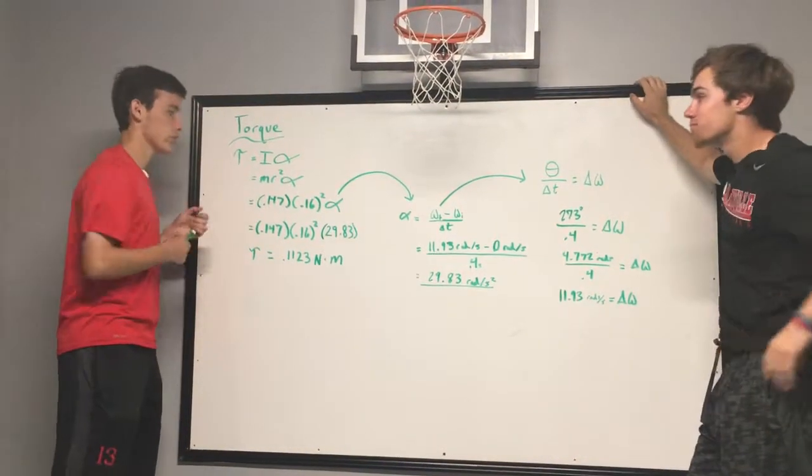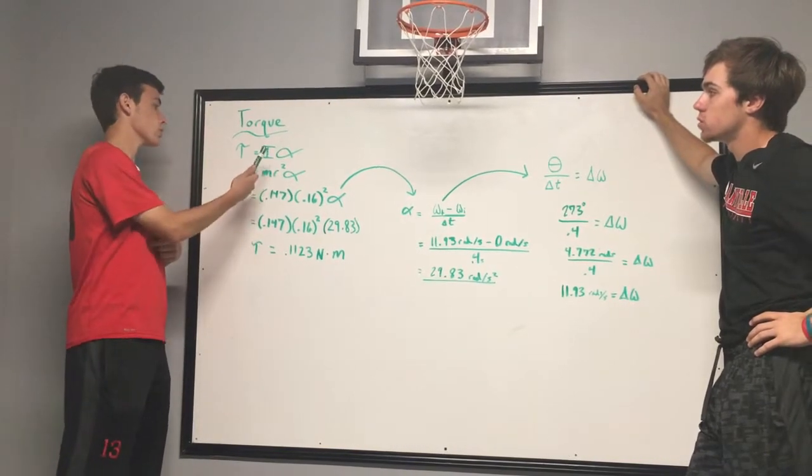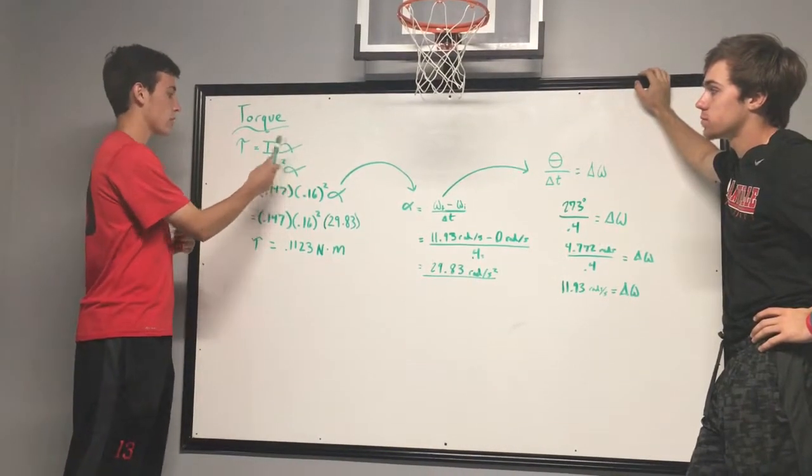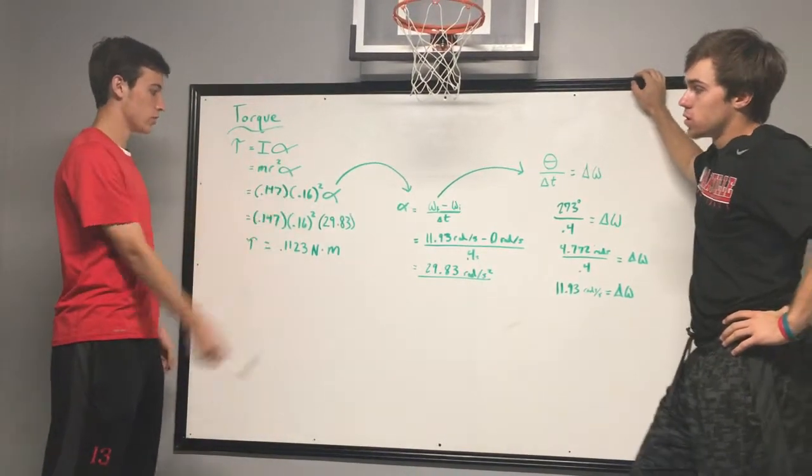Next, we're calculating torque, which allows the bottle to have angular acceleration. So we're using the formula torque equals moment of inertia times alpha, and the moment of inertia for the bottle would be MR squared times alpha.